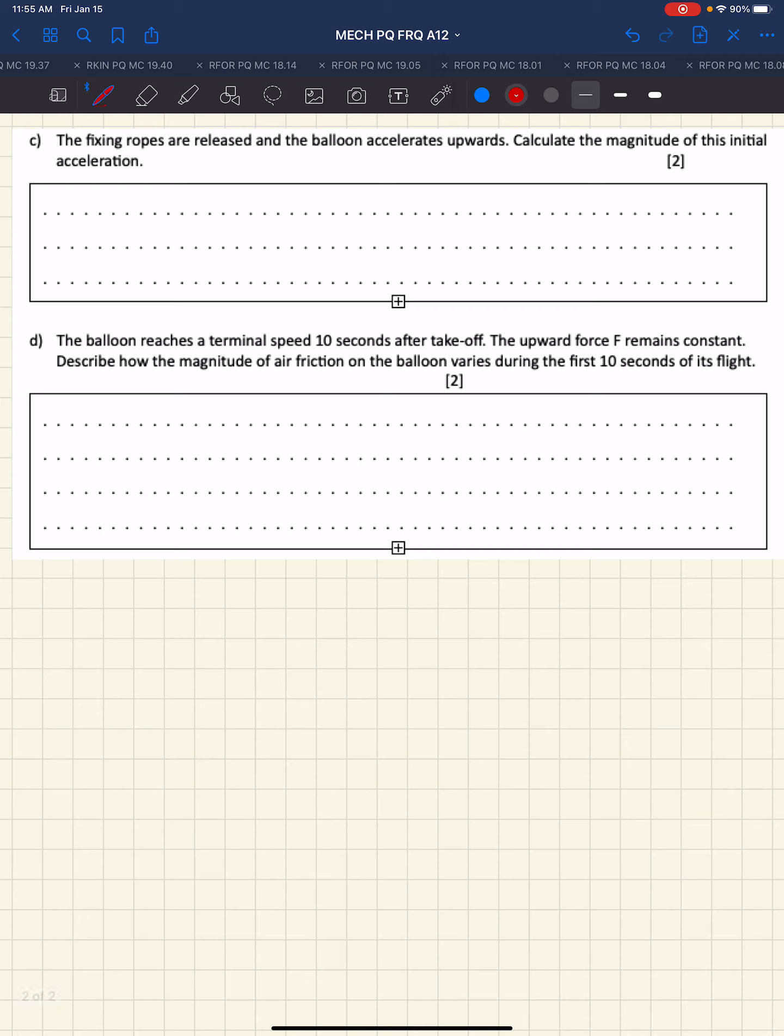Moving on to this part, the ropes are now released and the balloon accelerates upwards. We want the initial acceleration. Of course governing this is Newton's second law, so we know the net force is ma. What forces do we have? We have the force buoyant and the force of gravity, so we have the force buoyant minus the force of gravity. Ma is then equal to 2150 minus 1950 all over the mass which is 195.